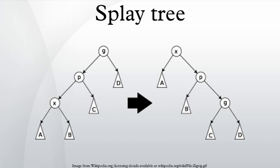One way to do this is to first perform a standard binary tree search for the element in question, and then use tree rotations in a specific fashion to bring the element to the top. Alternatively, a top-down algorithm can combine the search and the tree reorganization into a single phase.